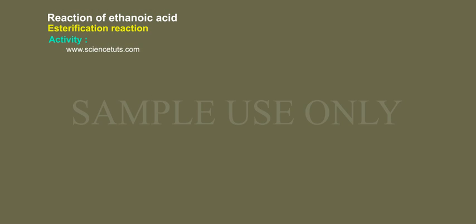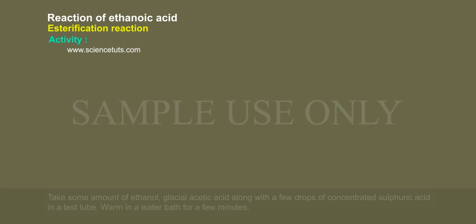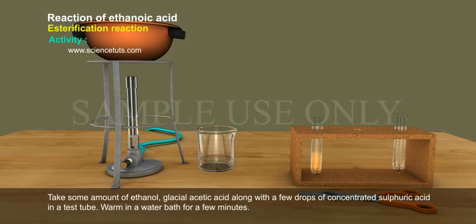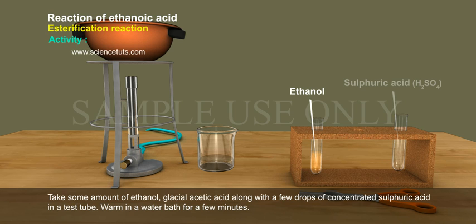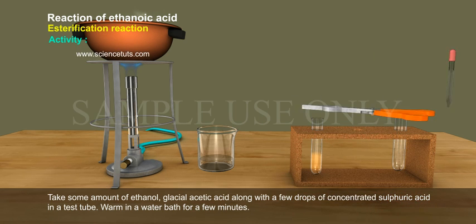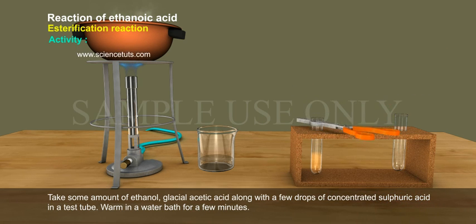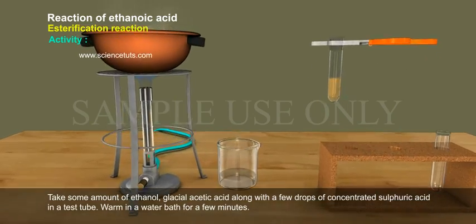Activity: Take some amount of ethanol and glacial acetic acid along with a few drops of concentrated sulfuric acid in a test tube. Warm in a water bath for a few minutes.